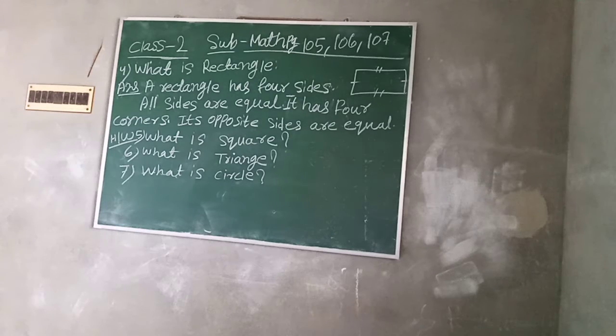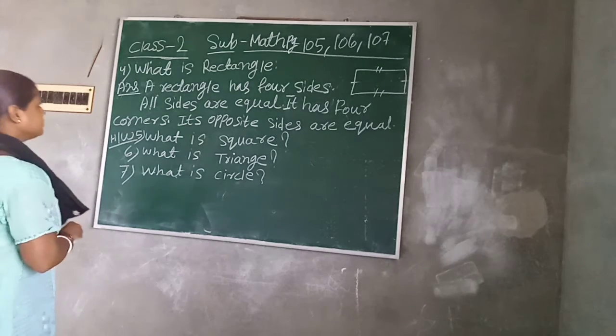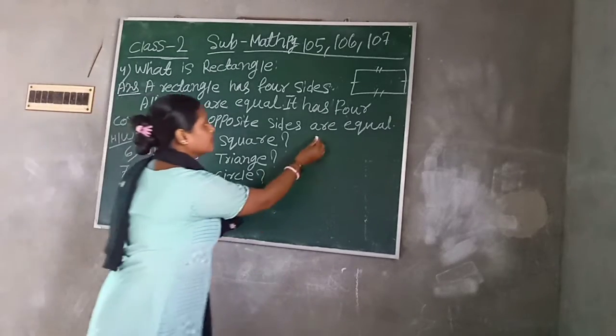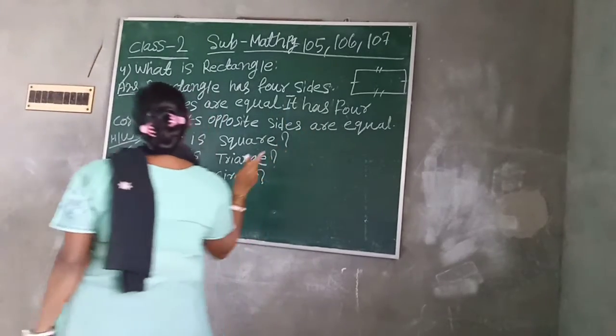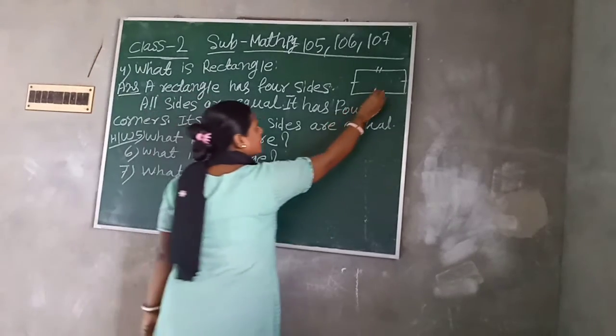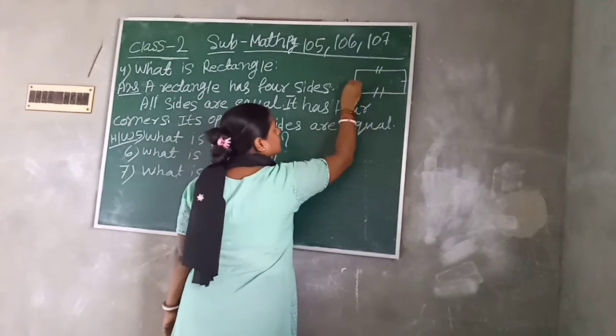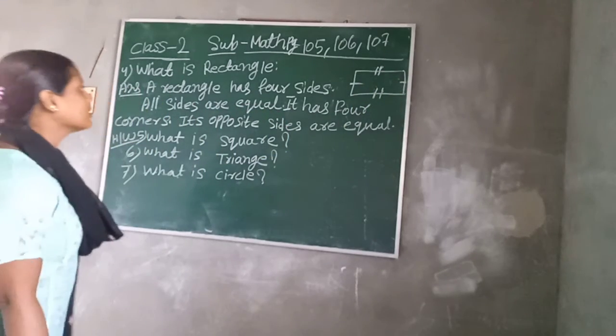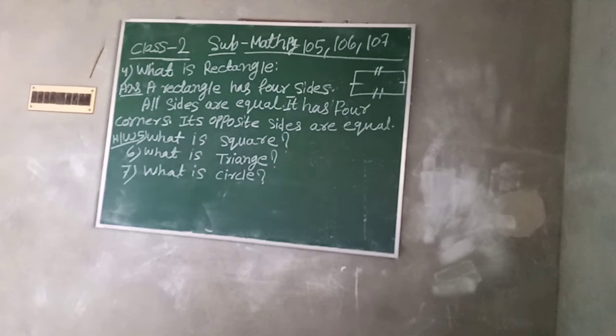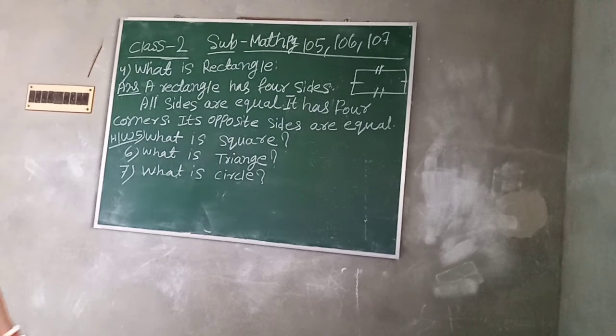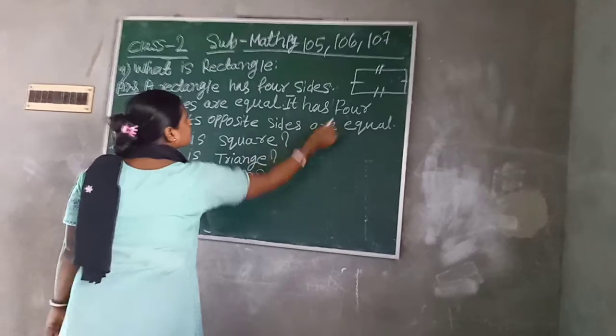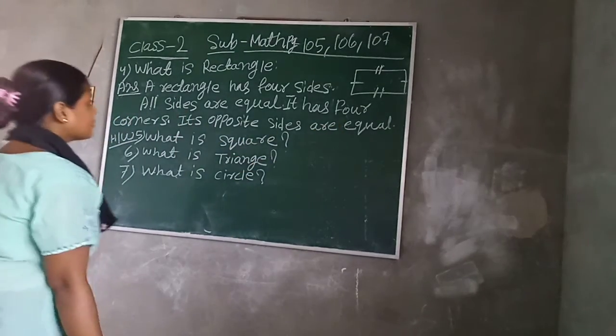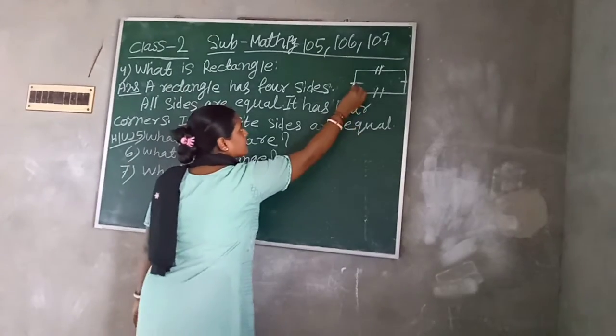What is rectangle? A rectangle has four sides. All sides are equal to four corners. Its opposite sides are equal. The rectangle has four sides and corners - two sides are equal and the other two sides are equal.